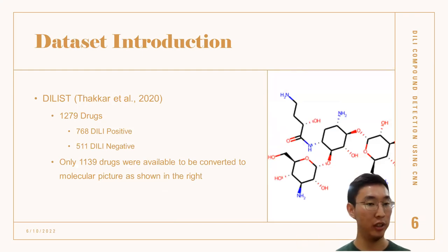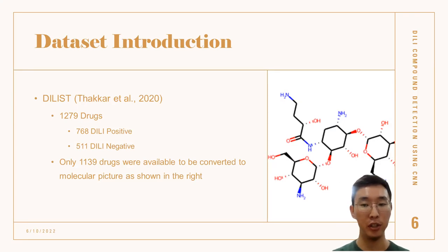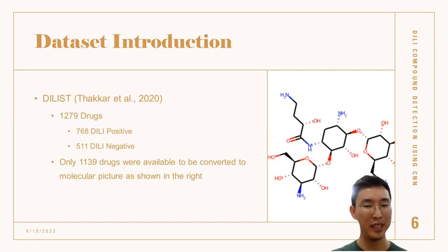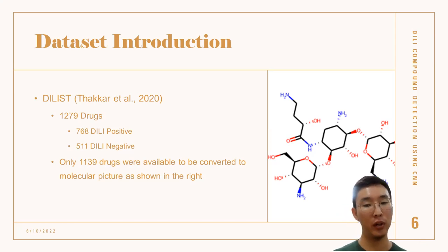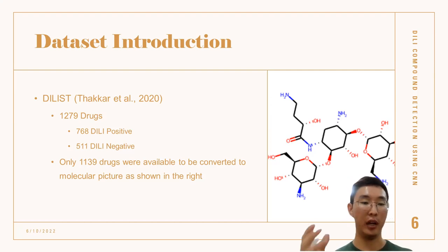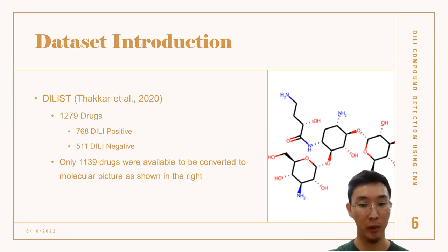For dataset introduction, I used a dataset called DLIST, created during the research project named Drug-Induced Liver Injury Severity and Toxicity, which is a binary classification of 1,279 drugs by human hepatotoxicity. The dataset contained 768 DLIST positives and 511 DLIST negatives, totaling 1,279 drugs. I used only 1,139 drugs, as those were the ones available for conversion into a picture of the drug molecule, such as the one shown on the right.